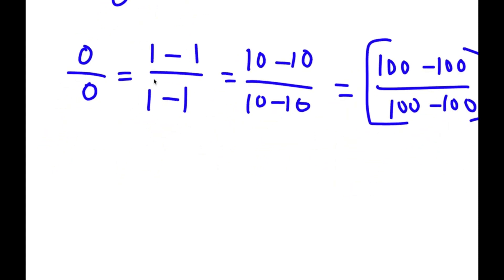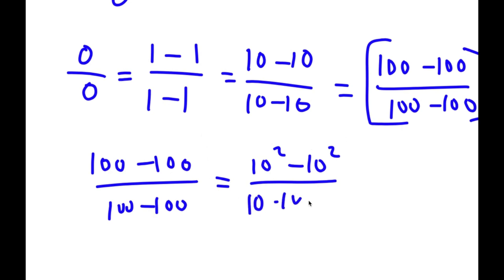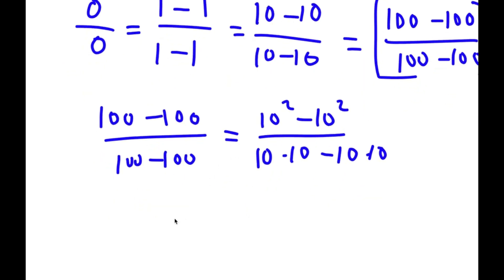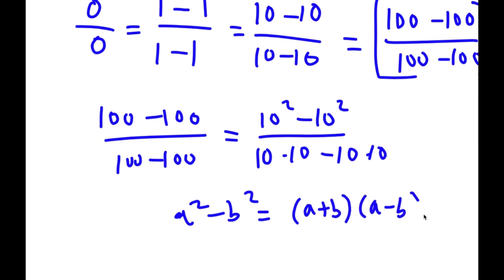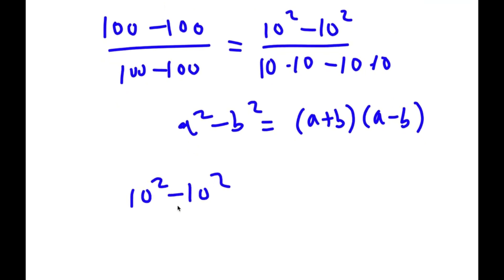Now 100 is the same thing as 10 squared. So 100 minus 100 over 100 minus 100 is the same thing as 10 squared minus 10 squared. Instead of writing 10 squared minus 10 squared again in the denominator, I'm going to write this as 10 times 10, which is the same thing as 10 squared. Now if I have something in the form a squared minus b squared, this equals a plus b times a minus b. So: 10 squared minus 10 squared over 10 times 10 minus 10 times 10.